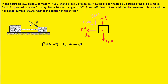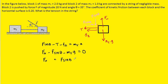Now over to the y direction. We have the upward normal force, as well as the downward f sine theta and the downward m2g. And certainly the block is not accelerating in the y direction, so we can set this equal to 0. Looking at this equation, if we add the two negative terms over to the right, we see that the normal force is equal to f sine theta plus m2 times g.